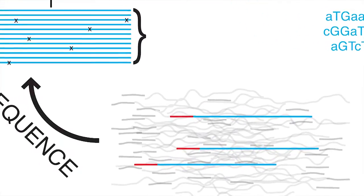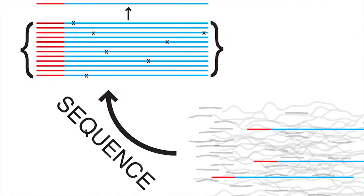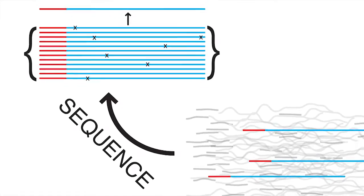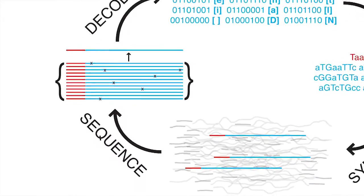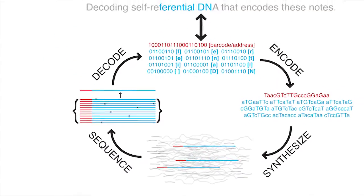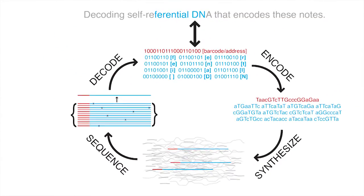When we sequence, we sequence the whole thing and get many copies of each particular barcode sequenced. We're then able to reconstruct the message by decoding it back to ones and zeros and then back to text. Because we have the address, we know where each piece goes back. So once we sequence everything, we're able to reconstruct the original digital information that was encoded.